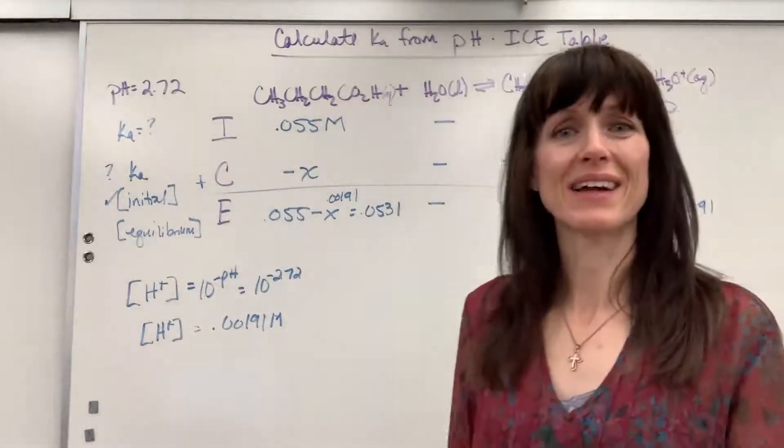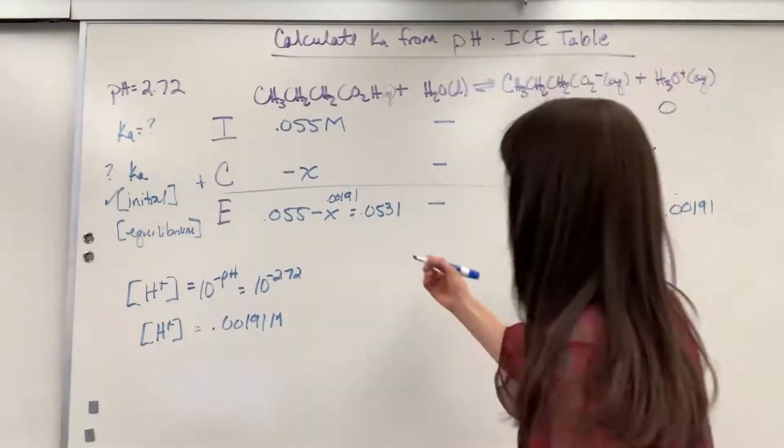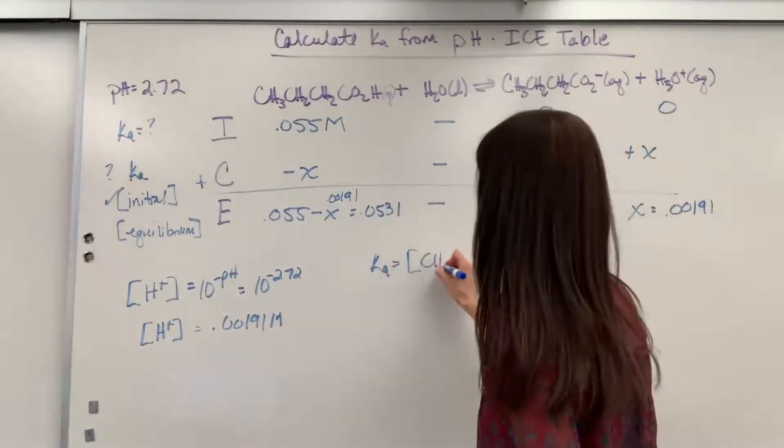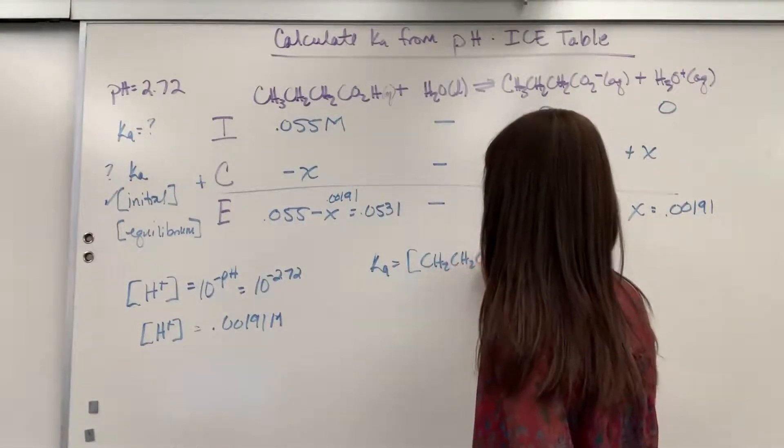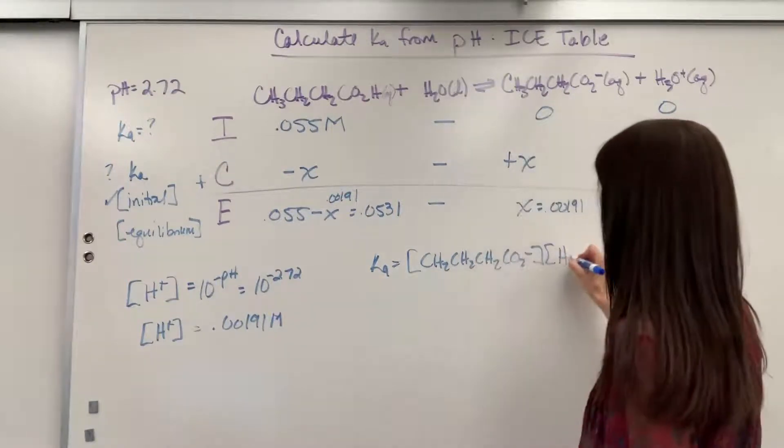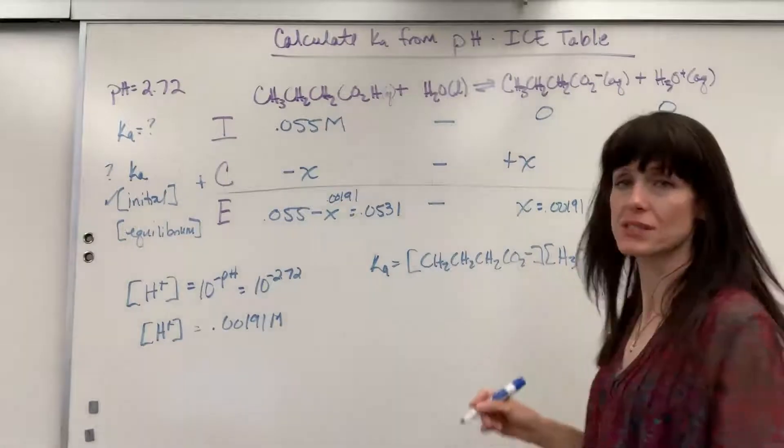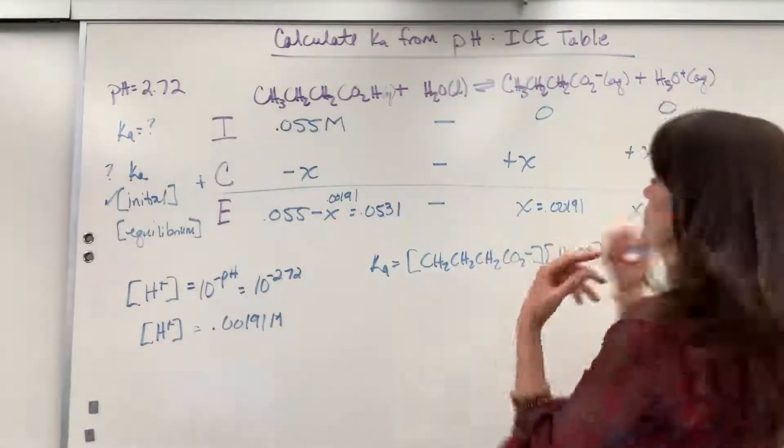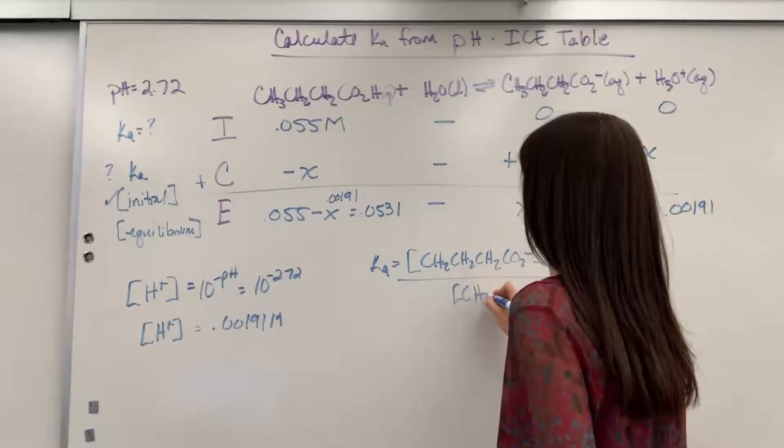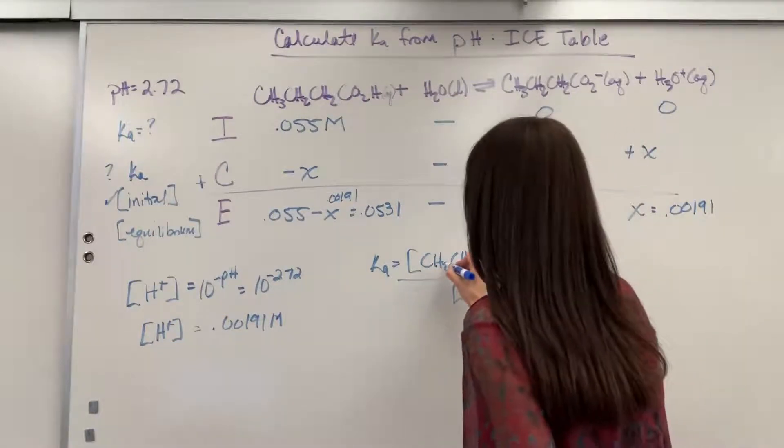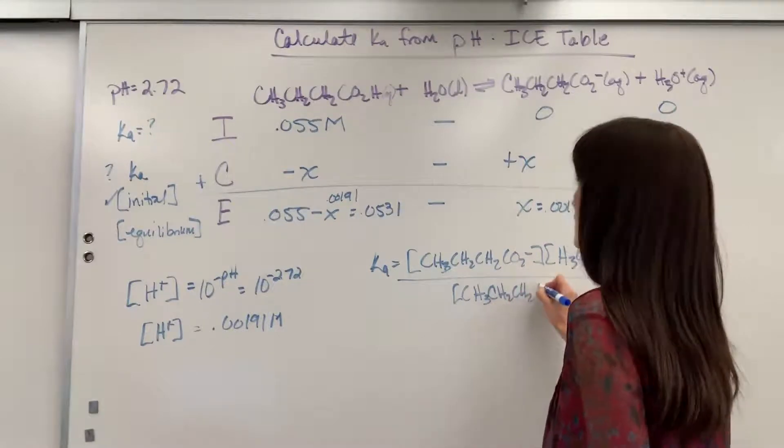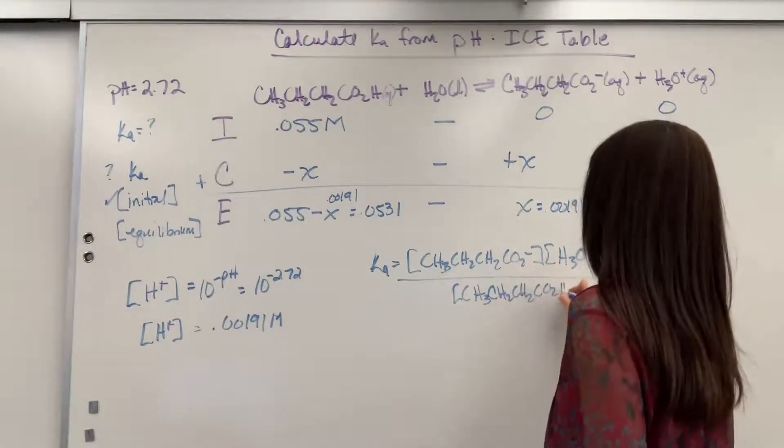From here, let's go ahead and plug it into our equilibrium expression. So Ka is going to be products. This is our butanoate ion times the hydronium. Again, that's just the same thing as a hydrogen ion. Divided by our butanoic acid. CO2H. There we go.